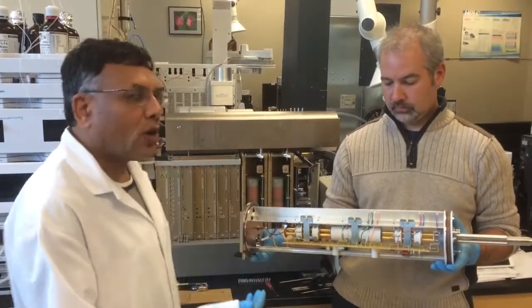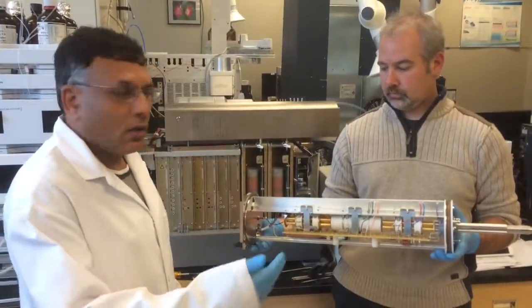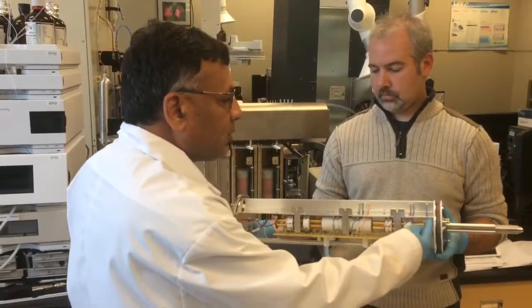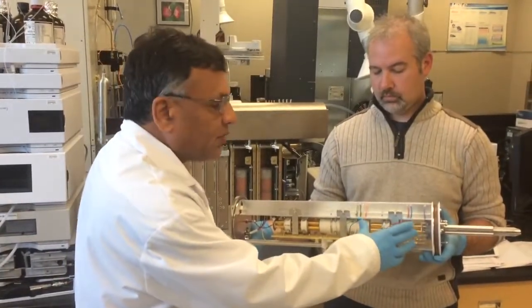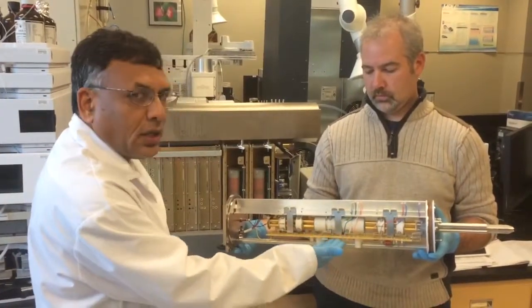This is the triple quadrupole with trapping capability. The ions move from here inside the mass spectrometer. They get aligned in stage one, which is called quadrupole one, then they get fragmented in the second stage.